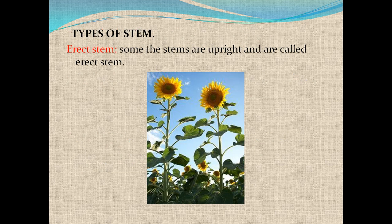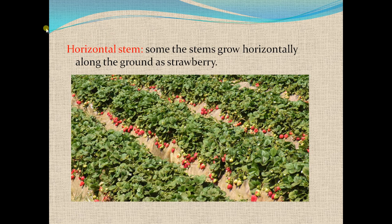Now, types of stem. Erect stem — some stems are upright in position, and such stems are called erect stems.